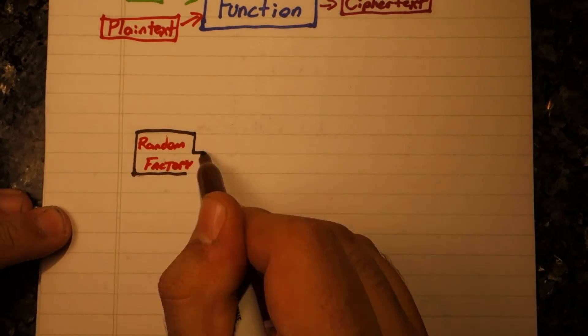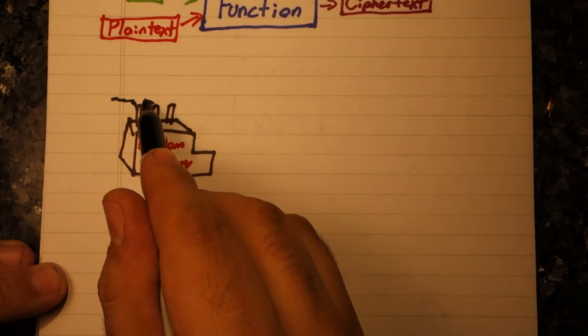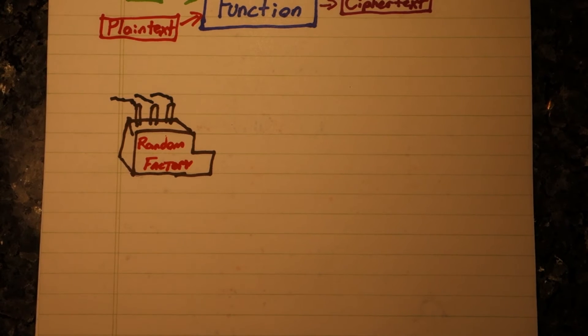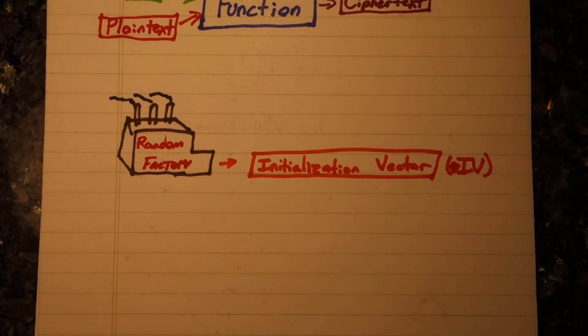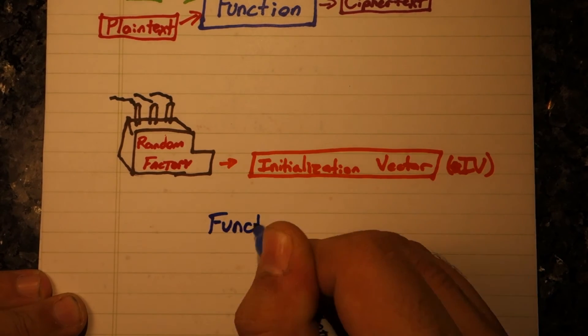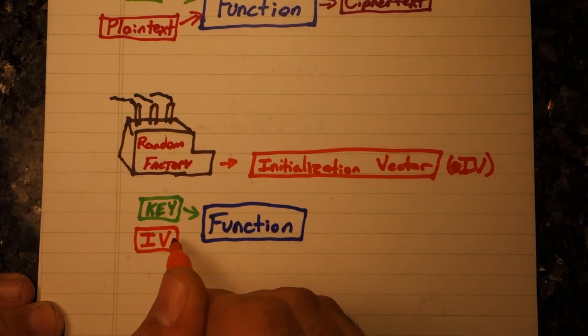Well, what if instead we used a random input? Since the key is secret, we can share this random input openly. Let's call this an initialization vector, or an IV for short.